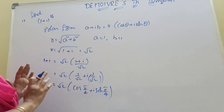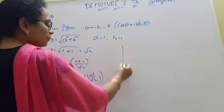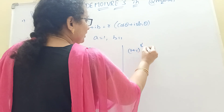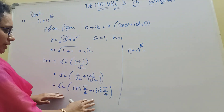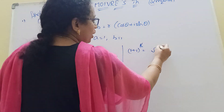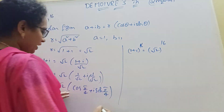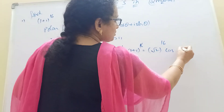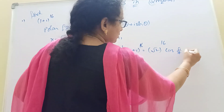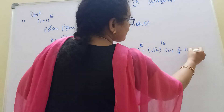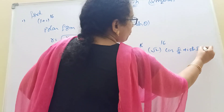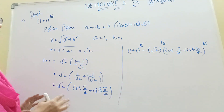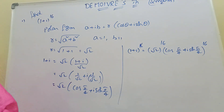Now you should find (1 + i) whole power 16. Listen — (1 + i) whole power 16. Take everything to the power 16. Root 2 to the power 16, and cos(pi/4) times 16, plus i sine(pi/4) times 16, all to the power 16.